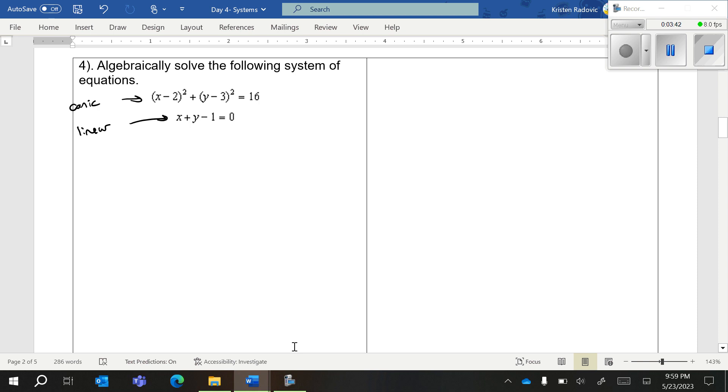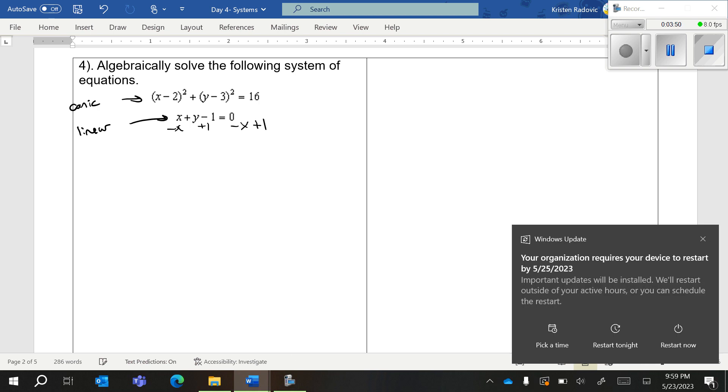The first step to this, and this is in your packet if you just turn over, I'm going to subtract x from both sides and I'm going to add one. My goal is to get the y by itself. These go away and I'm left with y equals negative x plus one.